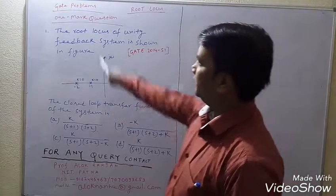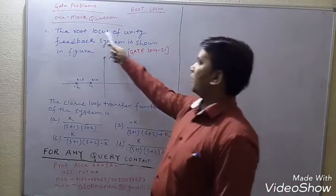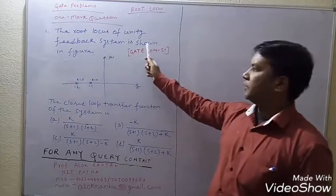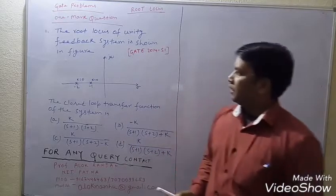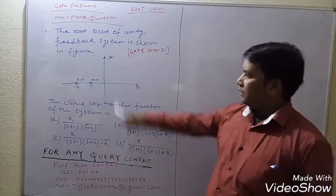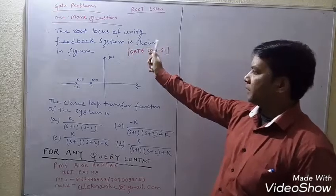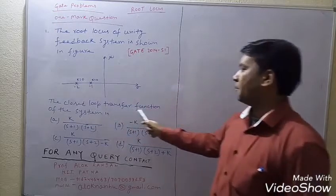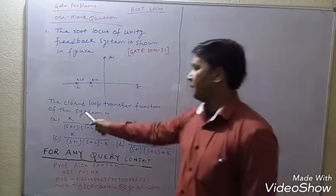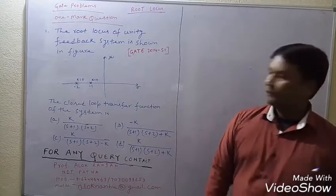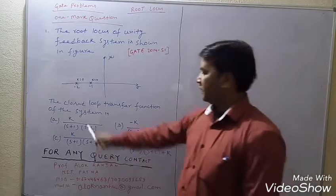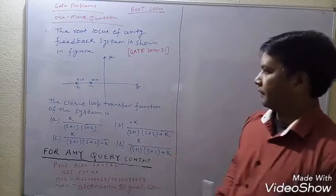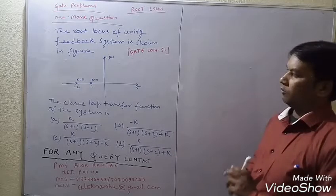The problem is: the root locus of a unity feedback system is shown in the figure. The closed loop transfer function of the system has four options — first is K/(s+1), and there are four options total. Now, how to solve this?